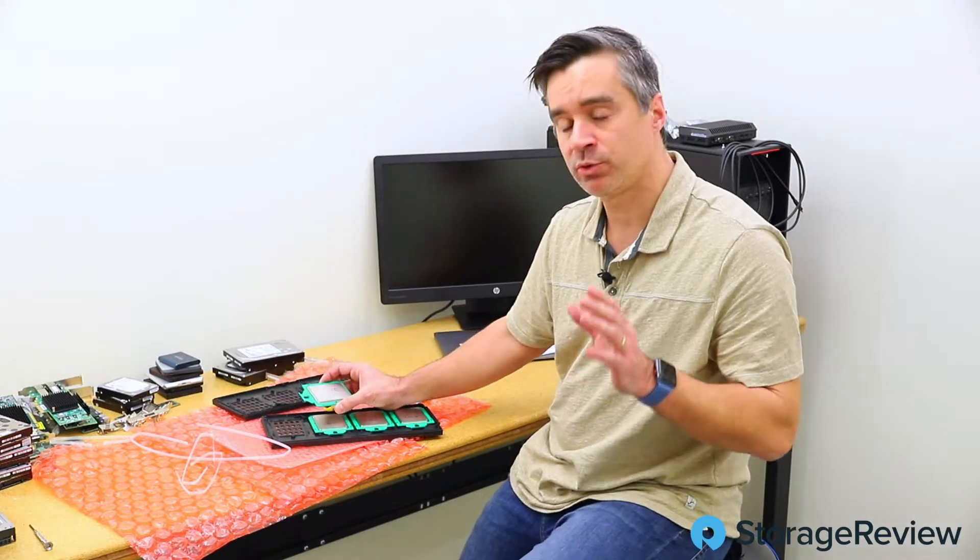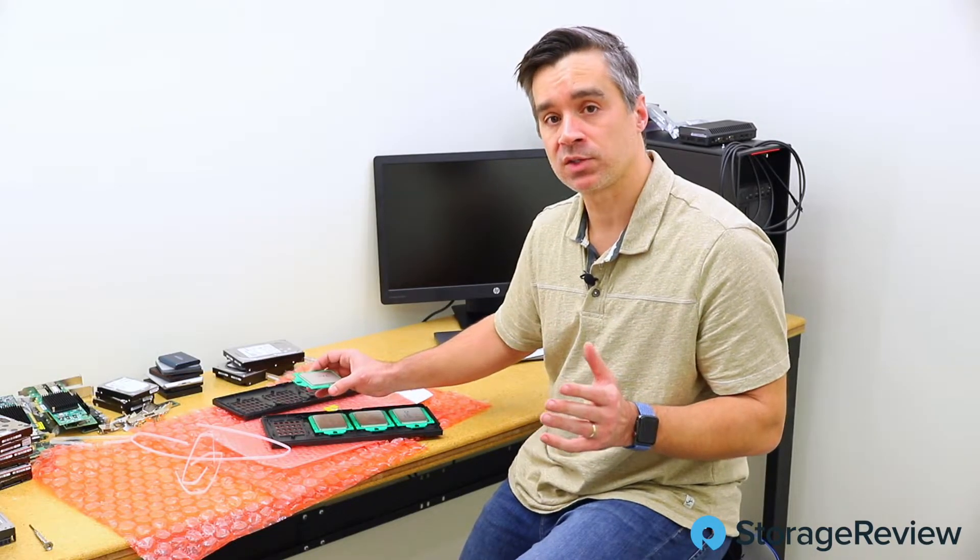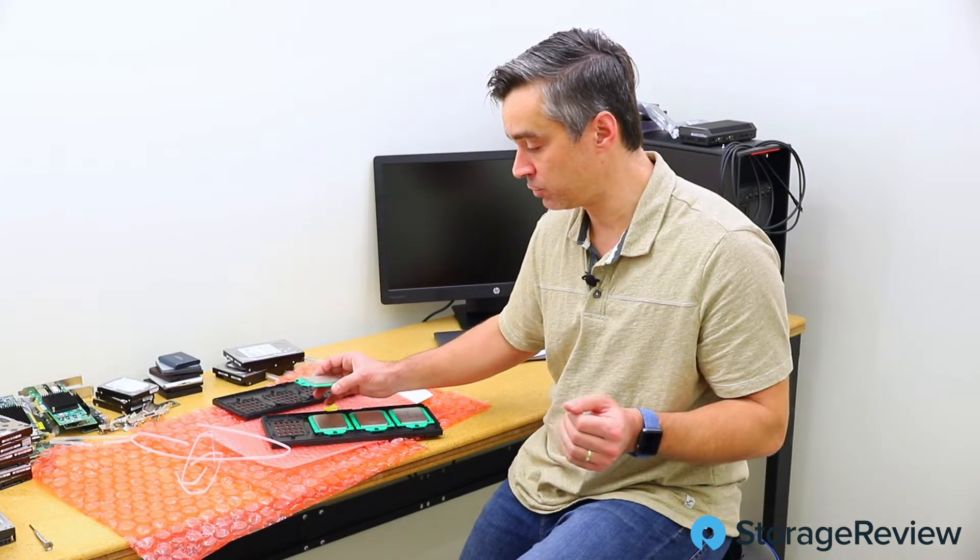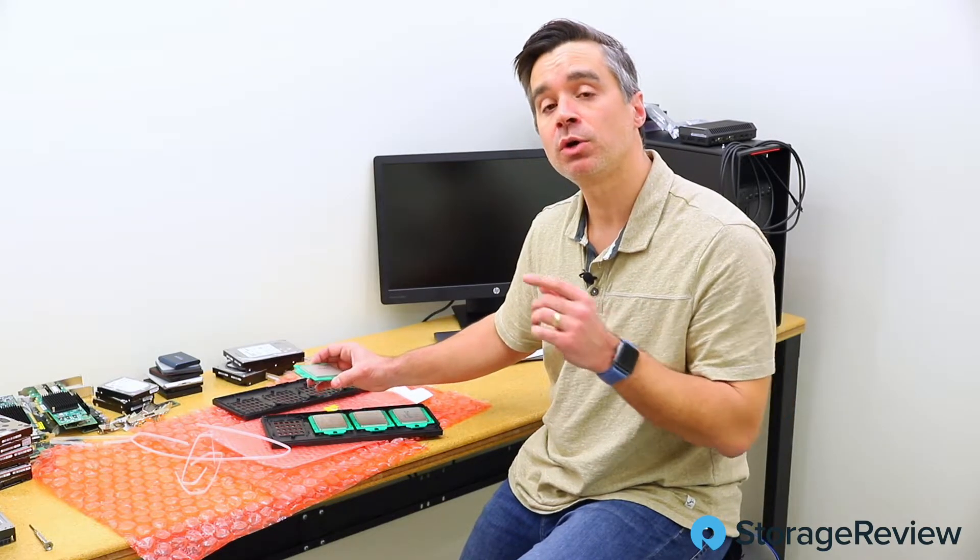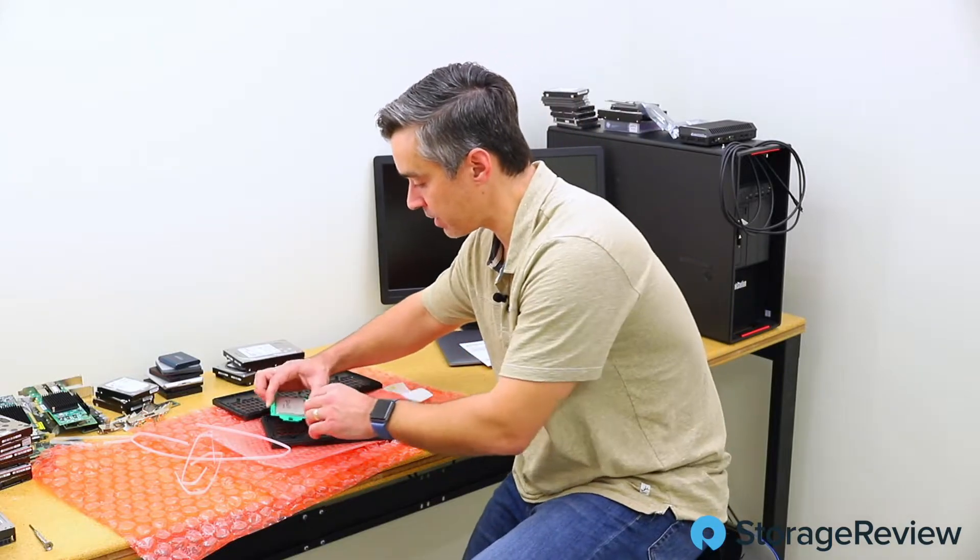And the reason we've got two is AMD splits their modeling up in the P and non-P. So 7662 is for the dual proc systems. You'll take two of these and put them in a dual proc system. No problem. You can also use just one of them in a single proc system. So hold on to that thought for a second.